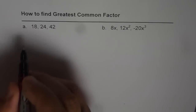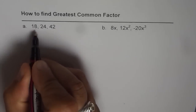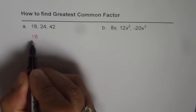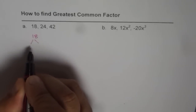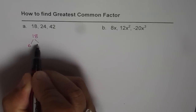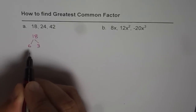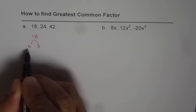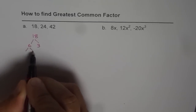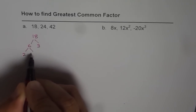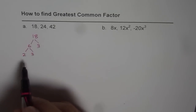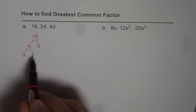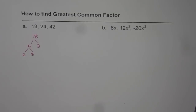Starting with 18, we can prime factorize 18. 18 could be written as 6 times 3, and then 6 could be written as 2 times 3. So the factors for 18 are 2 times 3 times 3 — those are the three prime factors for 18.